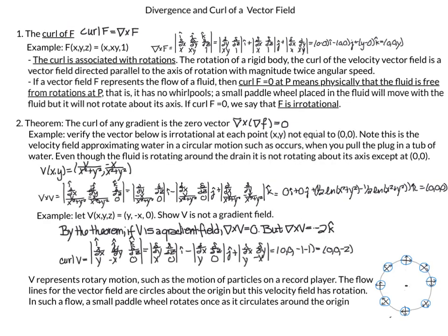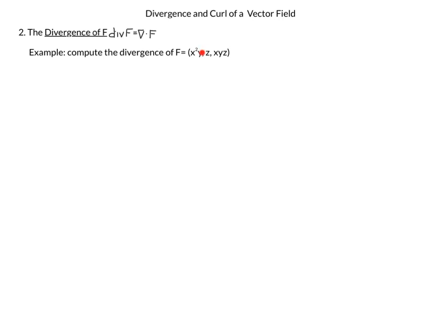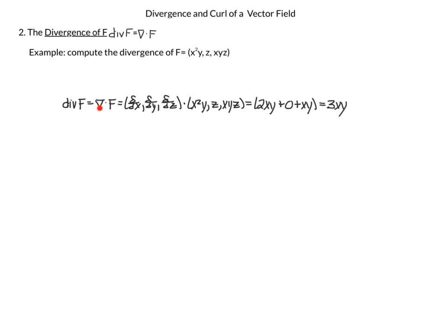That completes our discussion of curl, and we continue with divergence. The definition of divergence, notated div f, is equal to del dot f. So curl was del cross f, div is del dot f. An example: compute the divergence of f(x,y,z) = (x²y, z, xyz). To calculate the divergence, we take del dot f — d/dx of x²y is 2xy, d/dy of z is 0, and d/dz of xyz is xy — so our final answer is 3xy.